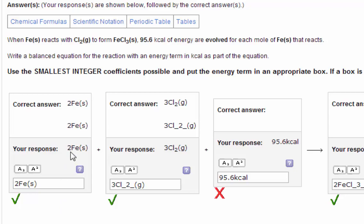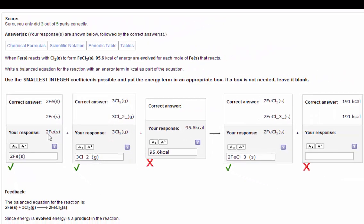So if the proportion is one mole for every 95.6, but in this case we actually have two moles in the balanced equation, you need to double up the heat value so it becomes 191 and of course it goes on the right side of the arrow.